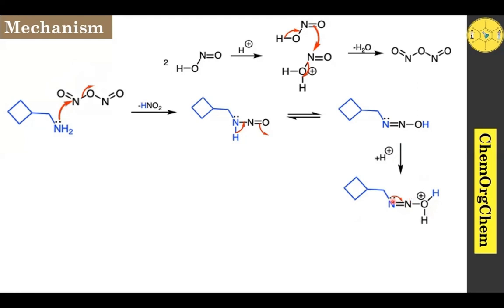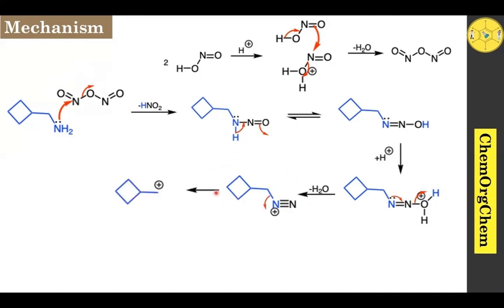The nitrogen lone pair of electrons shifts, followed by loss of the water molecule, which generates the corresponding diazonium ion intermediate. This diazonium ion is highly unstable and quickly loses nitrogen gas, generating the corresponding carbocation intermediate.